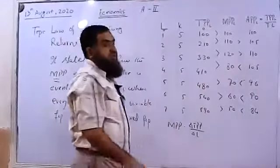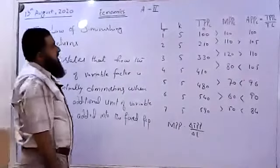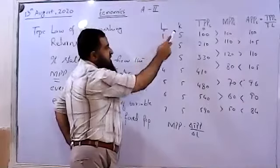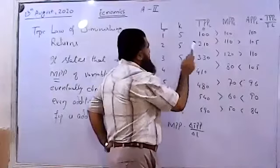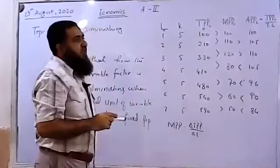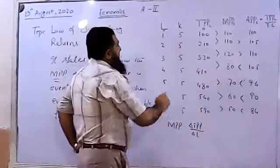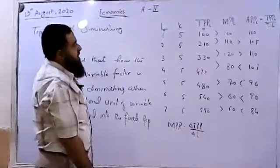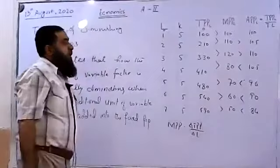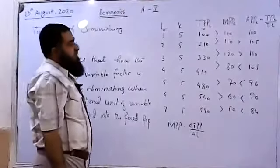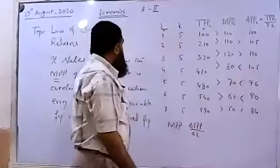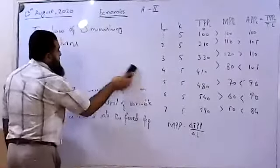The law is stating that when we add the variable factor of production — labor — into the fixed factor of production, the additional output or marginal physical product of the additional worker will eventually diminish. In our case it starts diminishing from the fourth worker — first it was increasing as we added the variable factor, and later it starts decreasing. We also see that when marginal product is increasing, average is also increasing but marginal product is higher than average. And when marginal product starts diminishing, average product also starts to decline. Now I am going to draw the diagrams of this law.